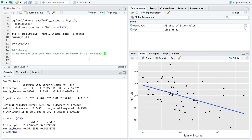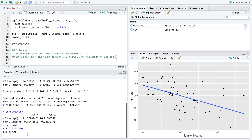We expect gift aid to be, and now here we have to come back to an interpretation for a confidence interval, to be between, we expect gift aid to be between $21.72 and $26.92 thousands of dollars. Okay, we can clean that up, right?